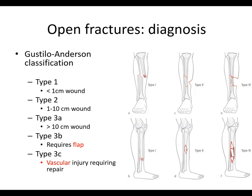And then you have the type 3s — big wounds, 10 centimeters and more. If that's all you have, then you have a type 3a. Or if you just have a bad segmental fracture with some soft tissue stripping, you may call that a type 3a. Whereas a type 3b is a case that requires a flap — some type of soft tissue coverage procedure where you need to get plastic surgery involved. These are cases that are now much more prone for infection, and that's really what we're worried about.